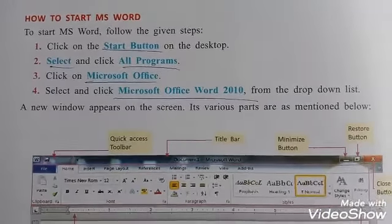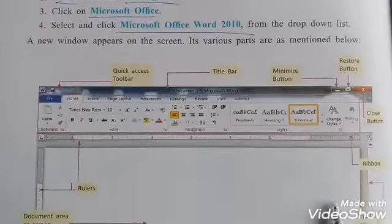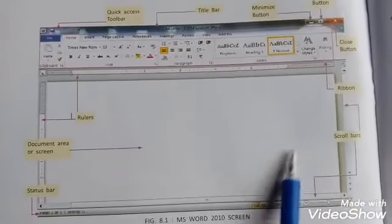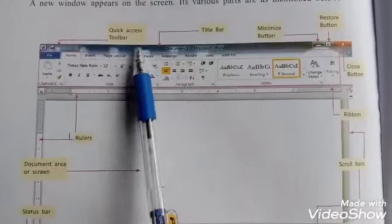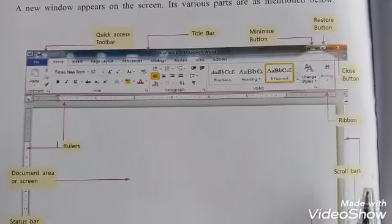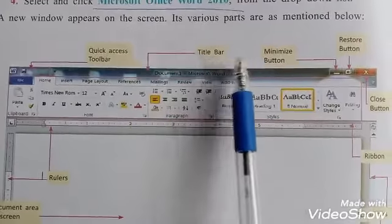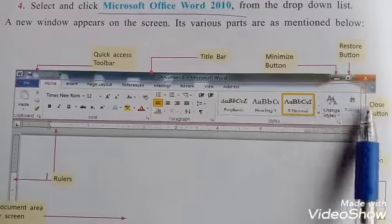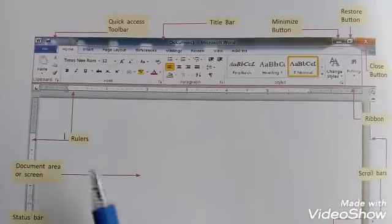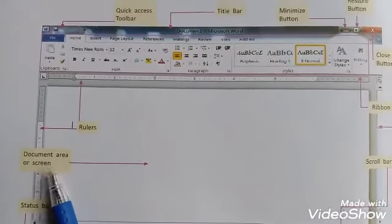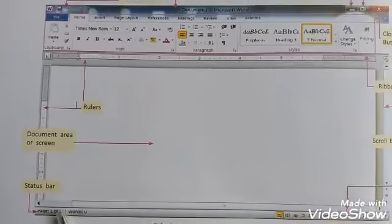When you click MS Word 2010, this page appears on your computer screen. These are the components of MS Word: Quick Access Toolbar, Title Bar, Minimize button, Restore button, Close button, Ribbon bars, Rulers, Document area, Screen, and Status Bar.